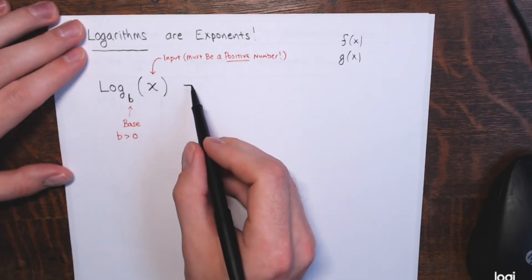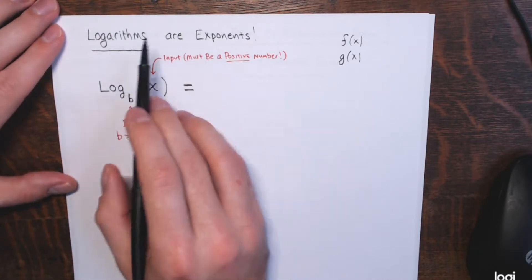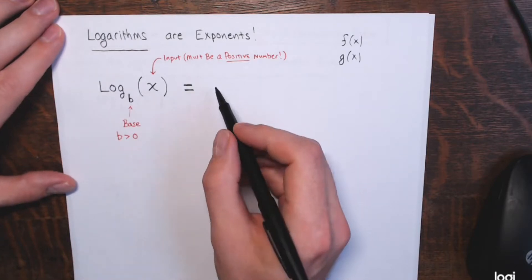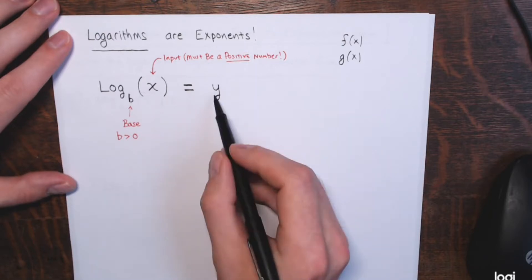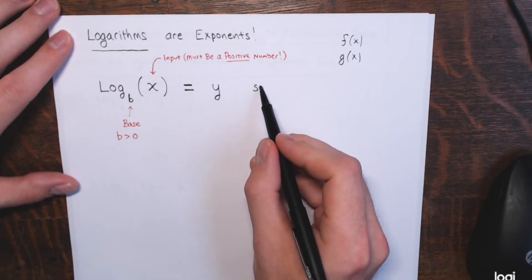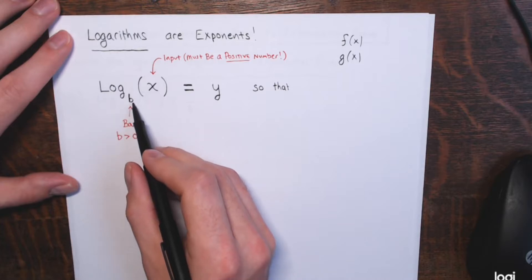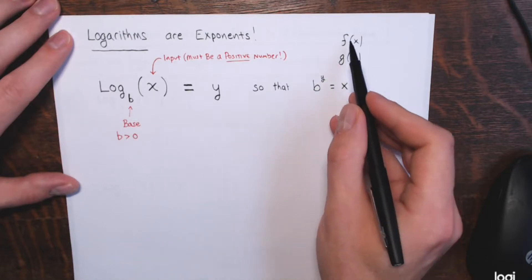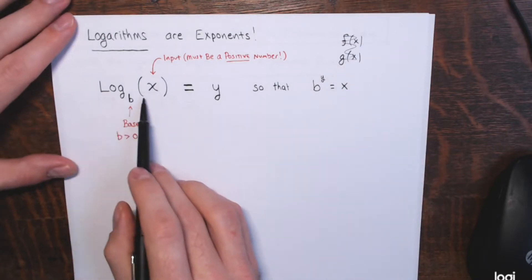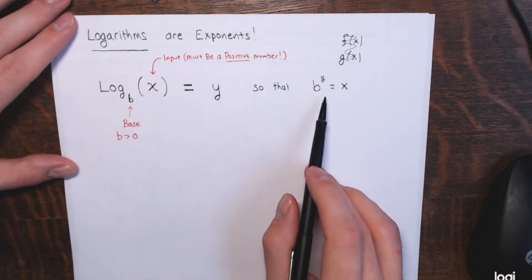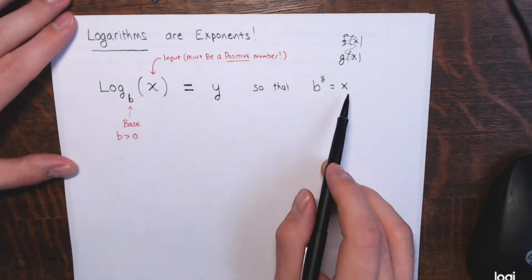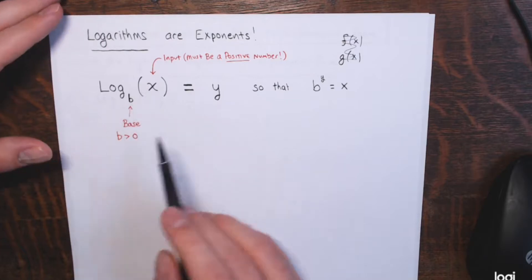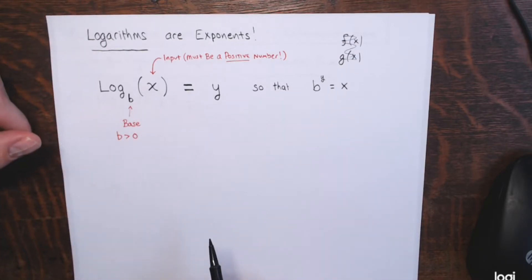Now, what is a logarithm equal to? Logarithms are exponents — what logarithms are equal to are exponents. I'll say it's equal to y, the output. So that b, the base on the logarithm, raised to this y power, equals x. This is called logarithmic form, and the equivalent expression is called exponential form. They mean the same thing. When you see log base b of x equals y, and b to the y power equals x, they mean the exact same thing — they just look different.